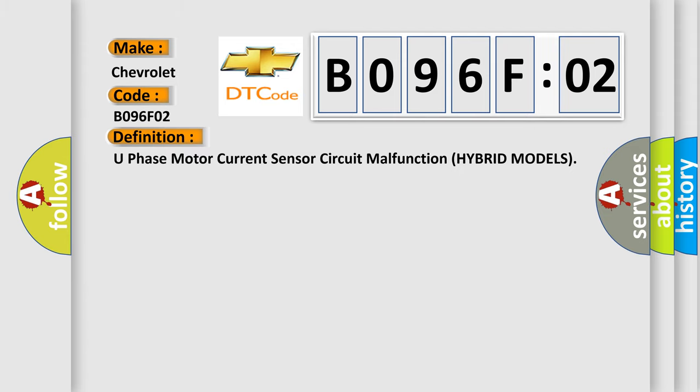The basic definition is: U-phase motor current sensor circuit malfunction hybrid models. And now this is a short description of this DTC code.